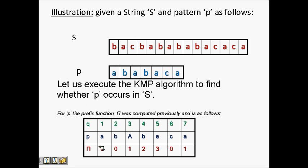Our pattern is a b a b a c a, and we have already computed the pi table: 0 0 1 2 3 0 1. This is pre-computed in O(m) time and is already known. Now let's start the example — we have this window: a b a b a c a.